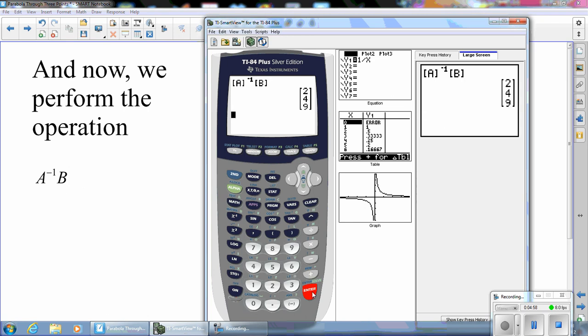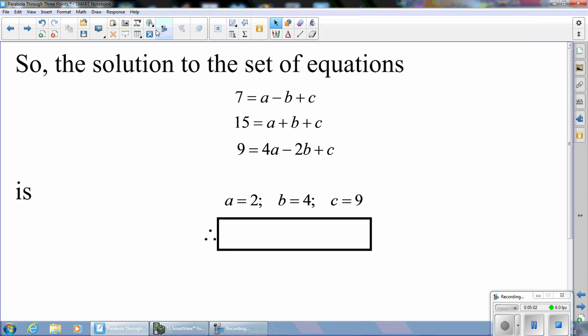And that gives us 2, 4, 9. So the solution to the set of equations is A equal 2, B equal 4, and C equal 9. Therefore, our parabola is Y equal 2X squared plus 4X plus 9.